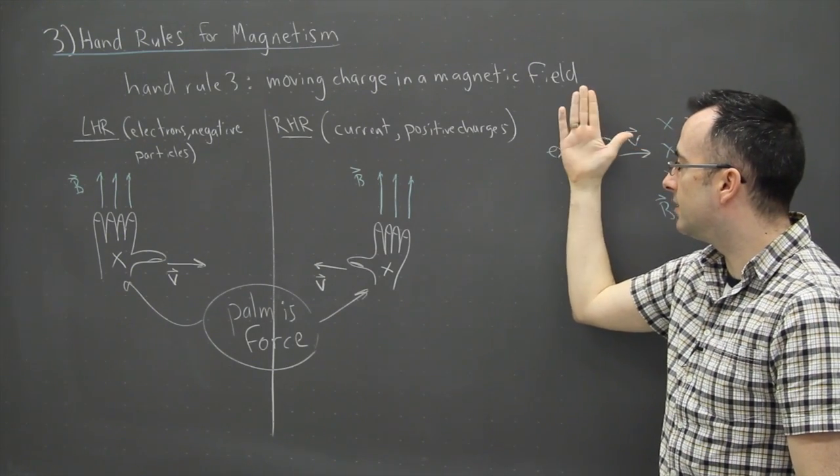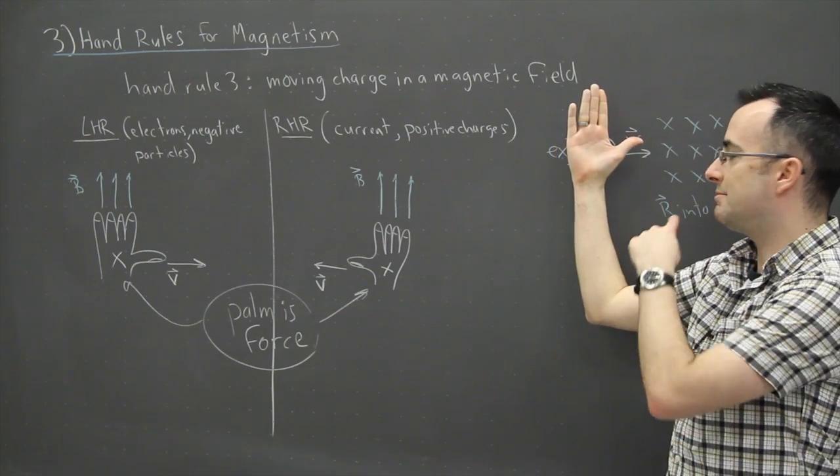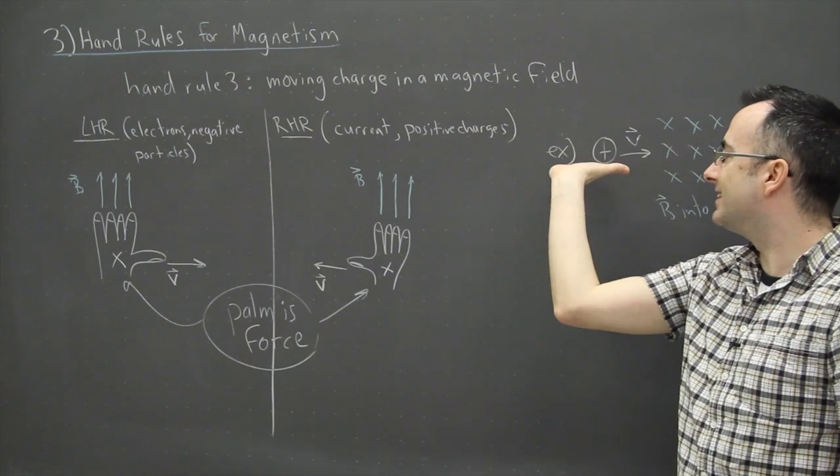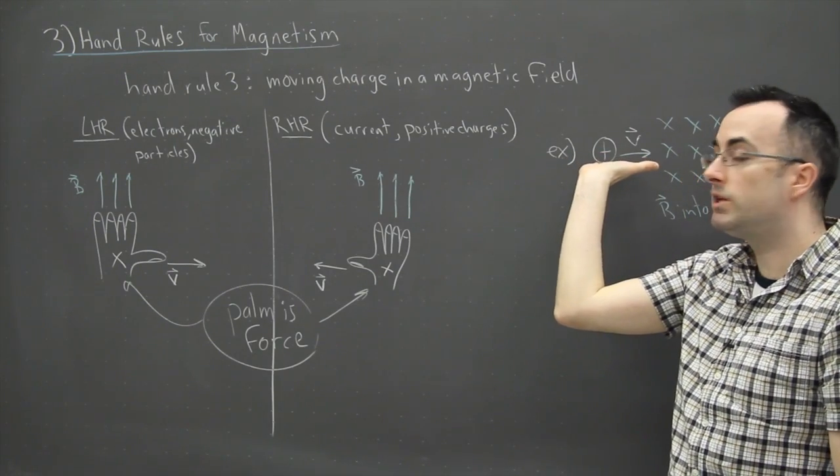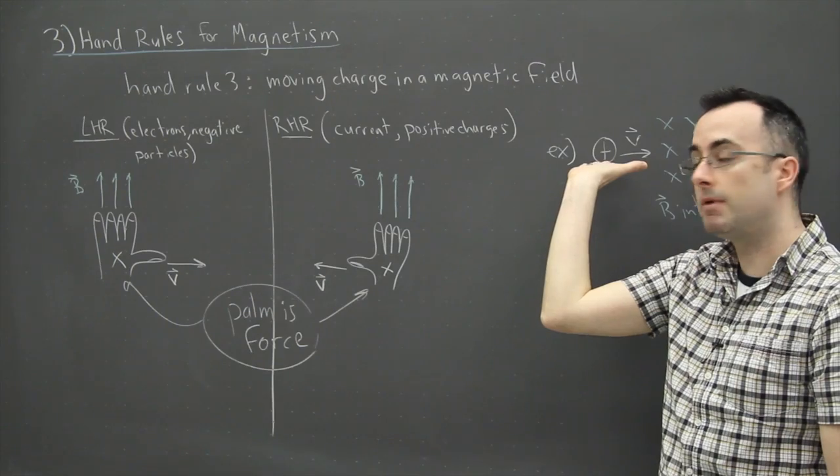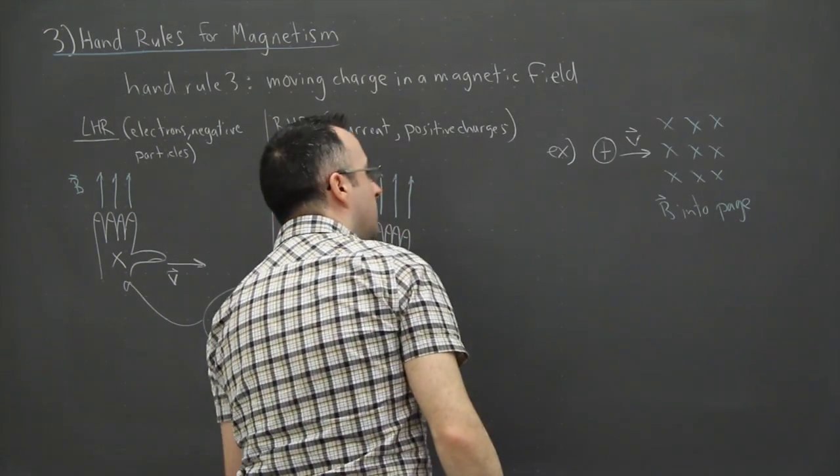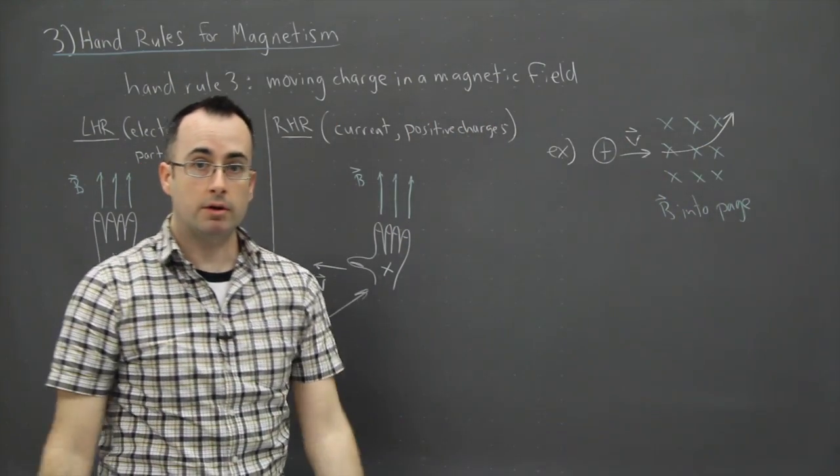Now which way do my fingers have to point? My fingers can point like this, or like this, or like whatever. So try to keep in mind, this one, because the magnetic field lines are into the page, that means what I have to do is point my hand like this. That might seem really awkward and weird, but that's how I do it. Which way is my palm going? Well, my palm is up. So because of that, this particle will then go like this, it'll curve that way. That's how it works.